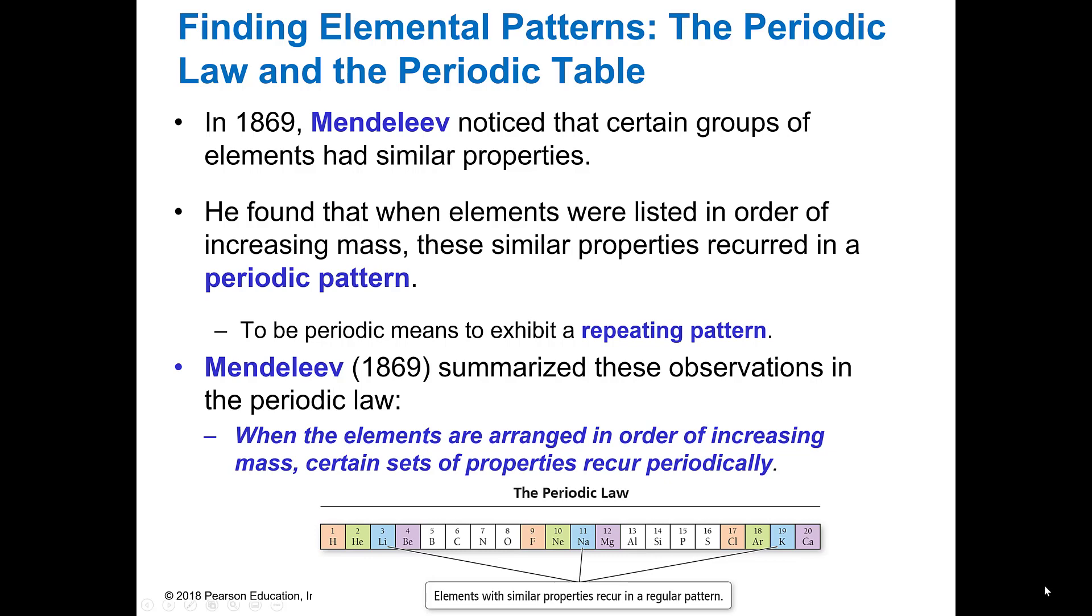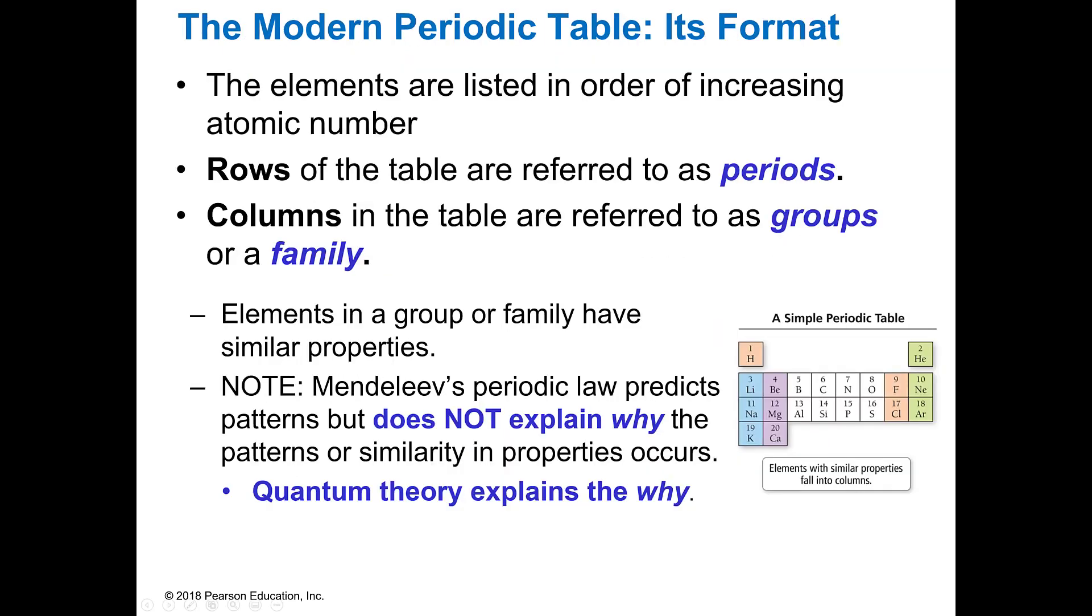So how we use that is we look and see how things are related as they go across a period, which is what we call the rows, or down a group, which is what we call the columns. And elements in a group or families have very similar properties.